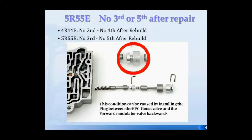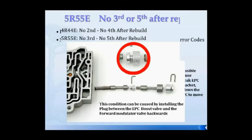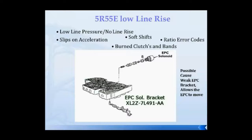Now let's talk about a couple of 5R55 E issues. For no third or fifth gear on the E, make sure the plug between the boost valve and forward modulator valve is properly positioned — it can easily be flipped around, so make sure it's oriented correctly. Regarding line pressure issues with the E transmission: Ford identified a problem with the EPC bracket — the line pressure control solenoid bracketry wasn't strong enough, allowing the EPC solenoid to move and changing valve position. They've released an updated bracket, the part number for which is in your handout. Make sure your transmission has the updated bracket installed.